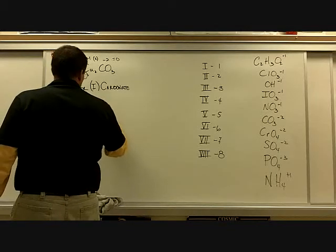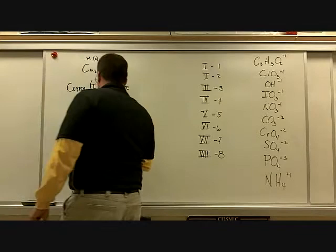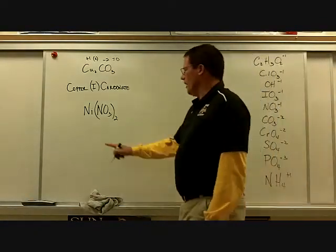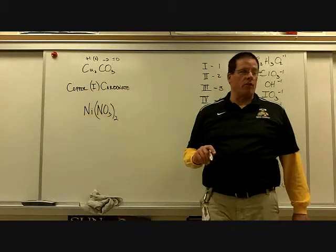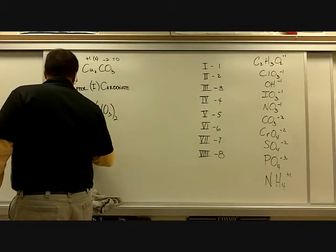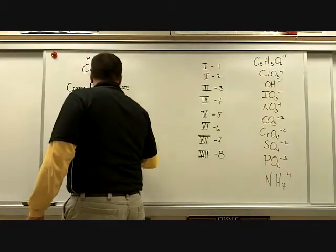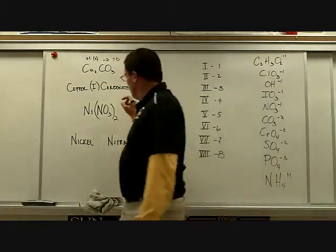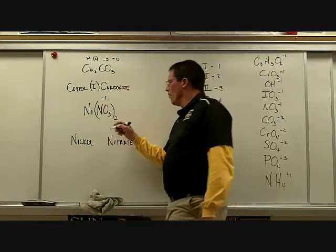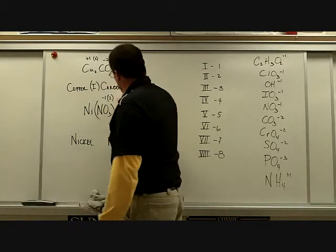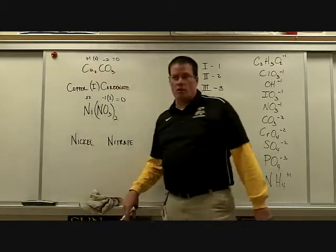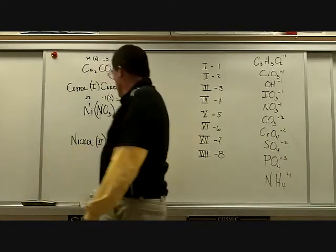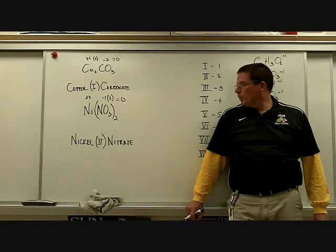Ni(NO₃)₂ — nickel nitrate. Your mind might write nickel(I) but that's wrong, because nickel doesn't have a plus-1 charge. Each nitrate has a negative-1 charge, and there are two of them, so the charge on nickel must be plus-2. Nickel can be 2 or 3, so plus-2 is valid. The formula as written on the paper wouldn't be acceptable with a plus-1 — we'll fix that.